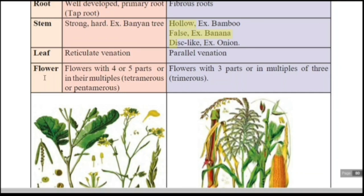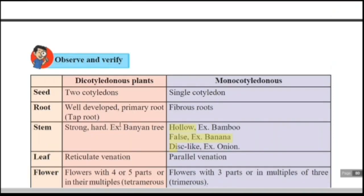The last criterion is the flower. Monocotyledons have trimerous flowers — three parts or multiples of three. Dicotyledons have four or five parts, giving tetramerous or pentamerous flowers. For example, hibiscus is a pentamerous flower because it has five petals — it is also an example of a dicotyledonous plant.